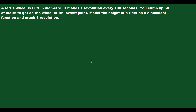A Ferris wheel is 60 feet in diameter. It makes one revolution every 100 seconds. You climb up six feet of stairs to get on the wheel at its lowest point. Model the height of a rider as a sinusoidal function and graph one revolution.